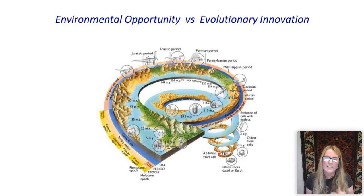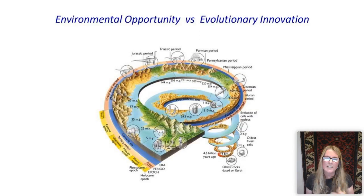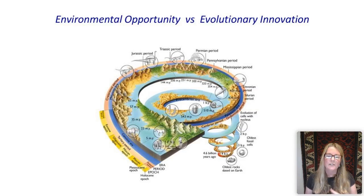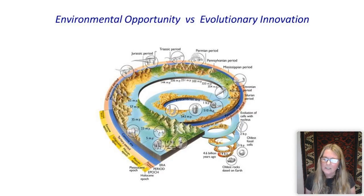I want to consider this relationship between environmental change and how that produces opportunities and permissive environments in which evolutionary innovation can take place. Of course, this isn't a one-way dialogue — there are feedbacks between evolutionary innovation feeding back on the environment. This narrative of the evolution of life through time is far more complex than a linear story. We have mass extinctions, feedbacks, and a very dynamic interaction on multiple timescales.